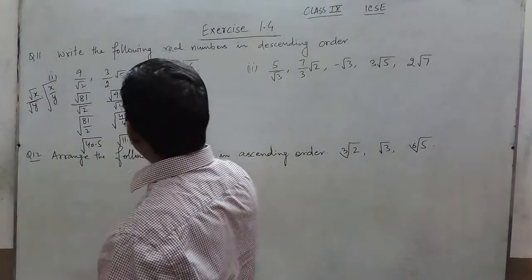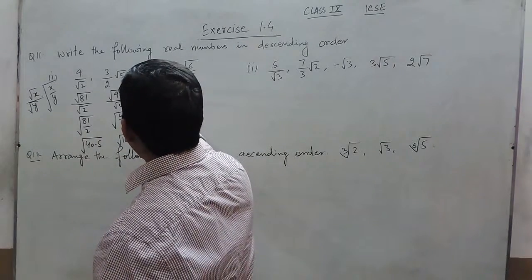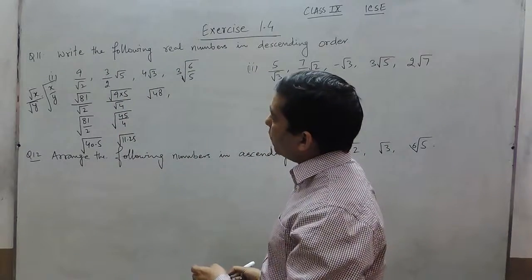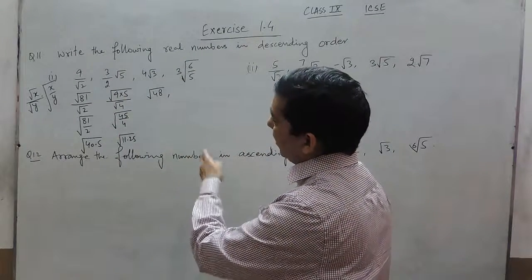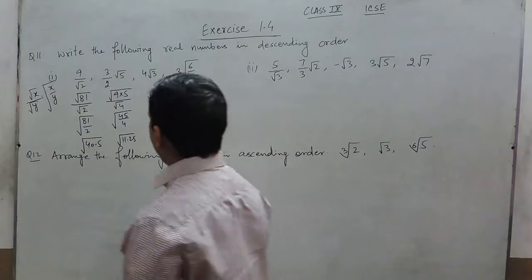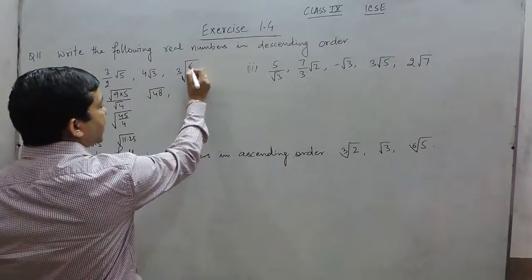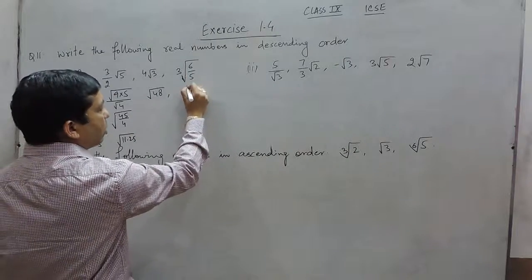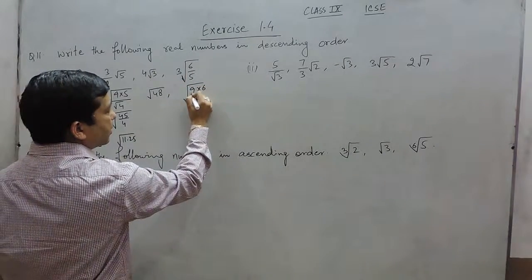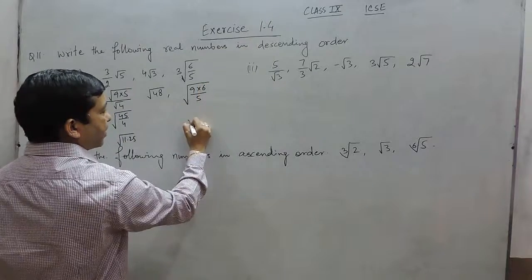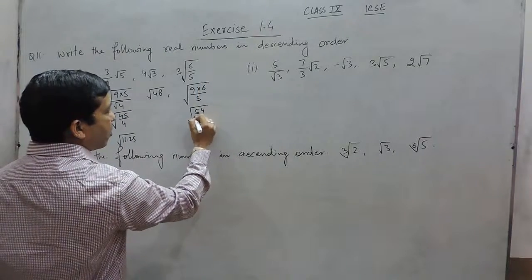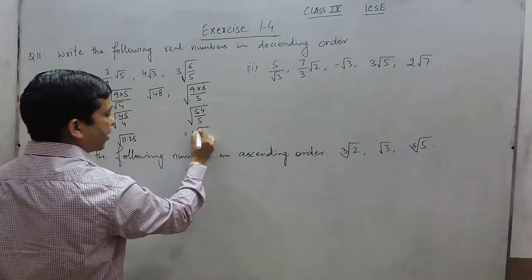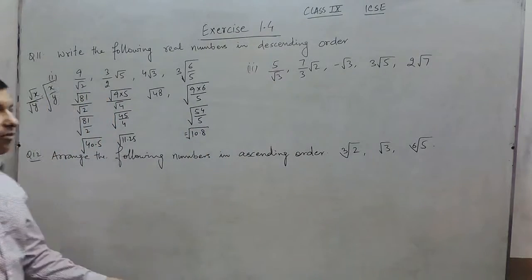4√3 can be written as √48 because 4 = √16, and √16 × √3 = √48. The next number: taking 3 inside gives 9, so it becomes √(9×6/5), which is √(54/5), or approximately √10.8. Now every number has been converted into under-root form.